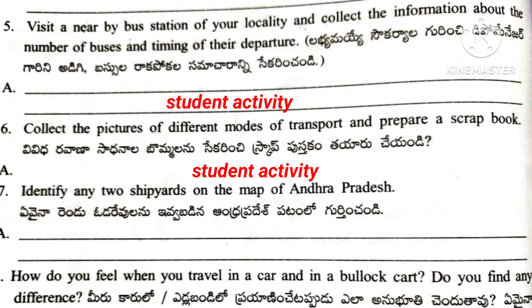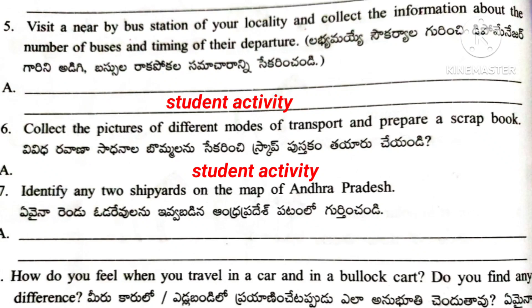Question number 7: Identify any 2 shipyards on the map of Andhra Pradesh. Here is the map of Andhra Pradesh. You can identify 2 shipyards: Visakhapatnam shipyard and Kakinada shipyard.